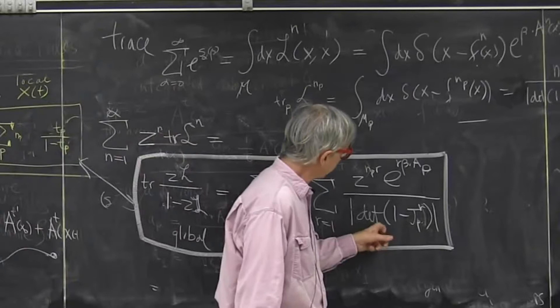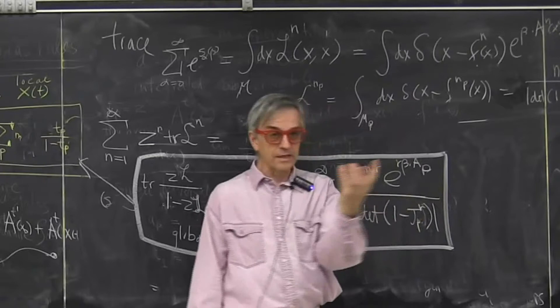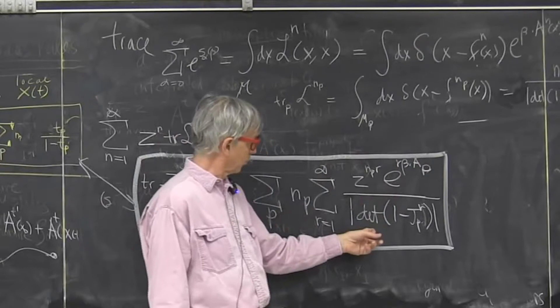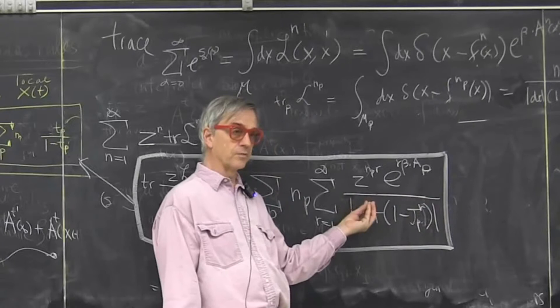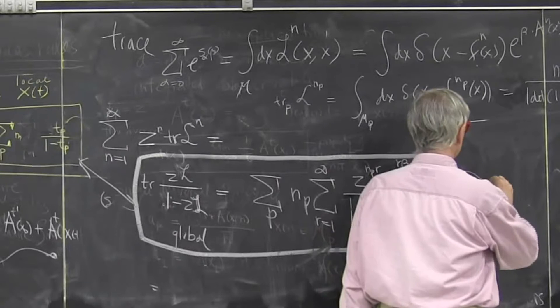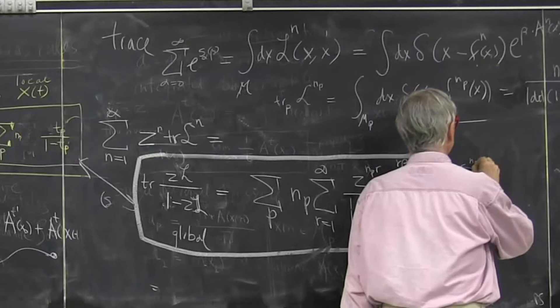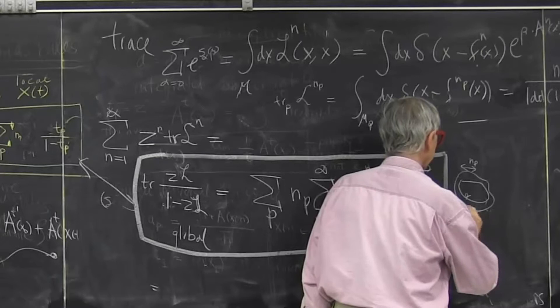But basically this is measuring the volume that periodic orbit owns. So very unstable orbit will have very large multipliers here, so they'll have small volumes. So this is really a geometrical thing that says, every orbit owns a tube, its length is NP, and its thickness is inverse multipliers, so if it's very unstable, the neighborhood is very thin.